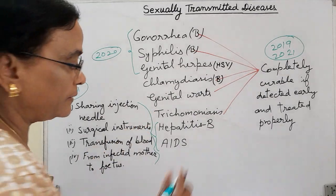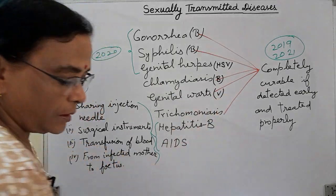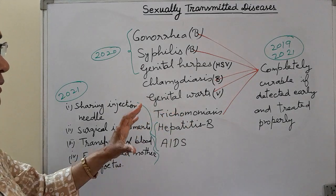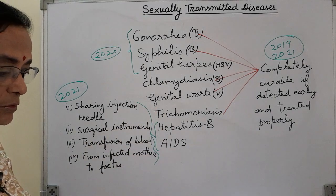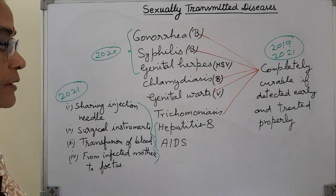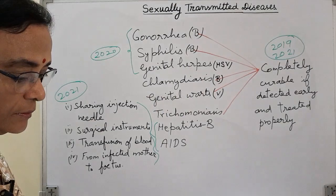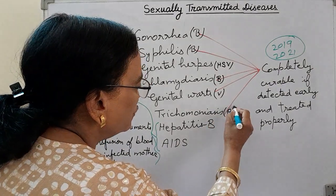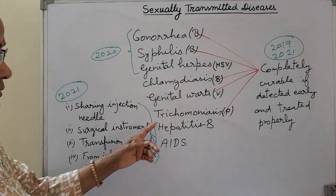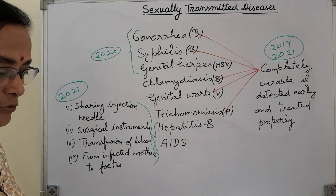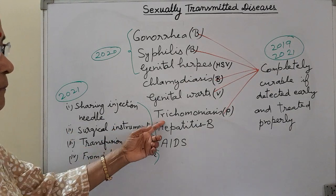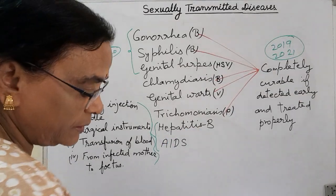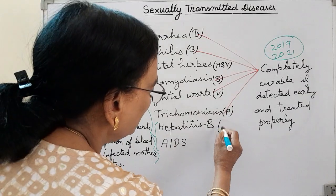Genital herpes is caused by the herpes simplex virus and is transmitted through skin-to-skin contact. Genital warts are caused by the human papilloma virus — the warts appear on the genital area, are pink in color, and are very fleshy. Trichomoniasis is caused by a flagellate protozoan.